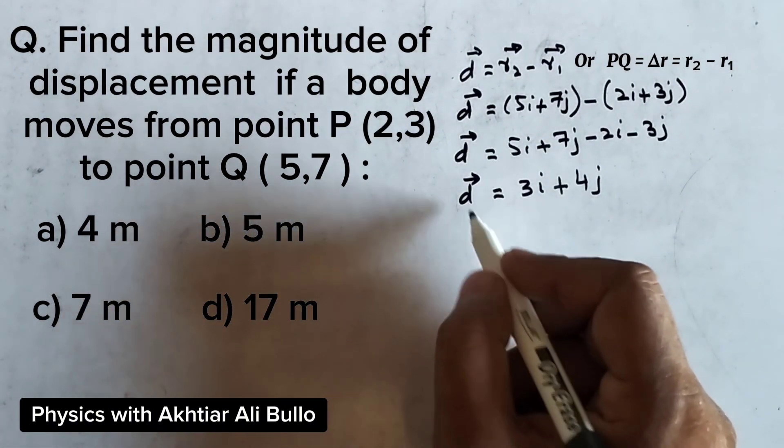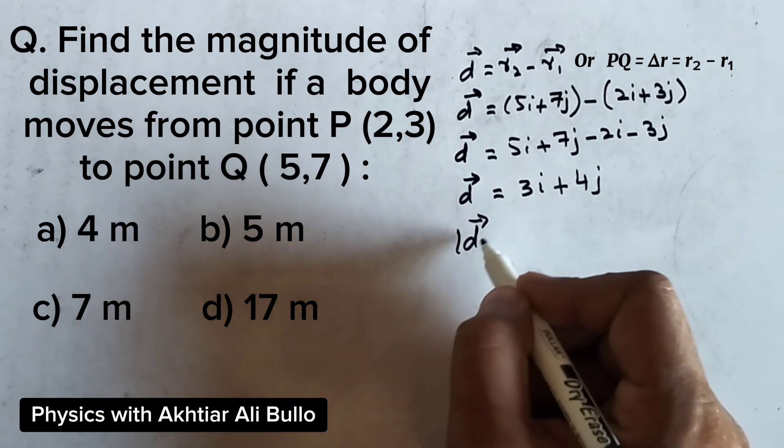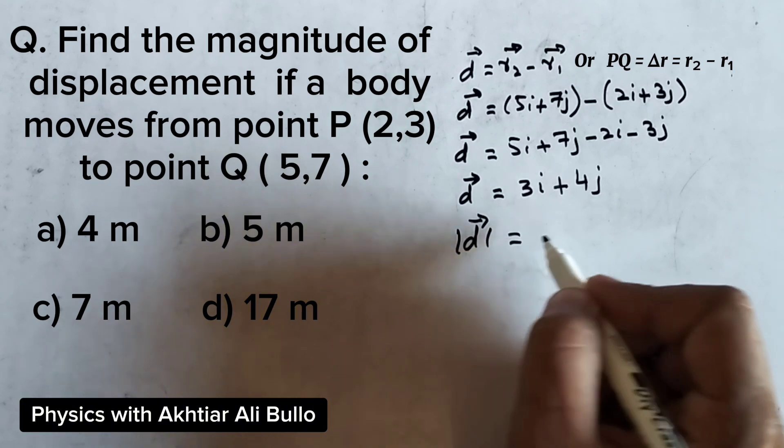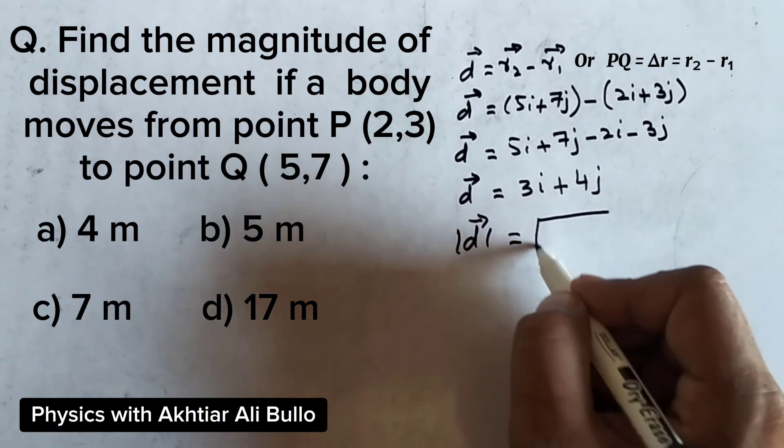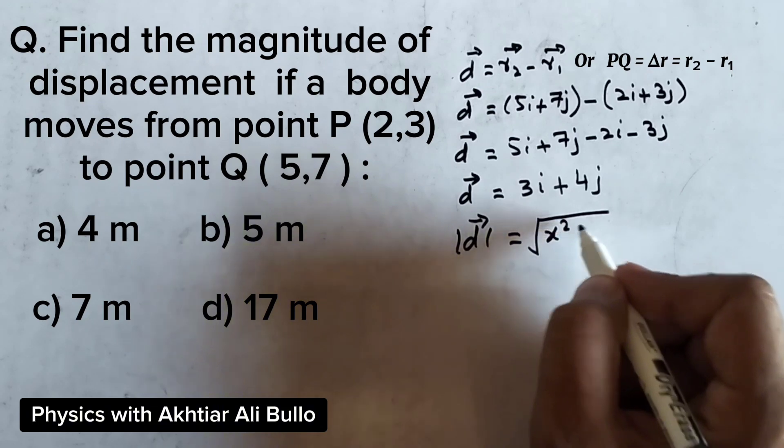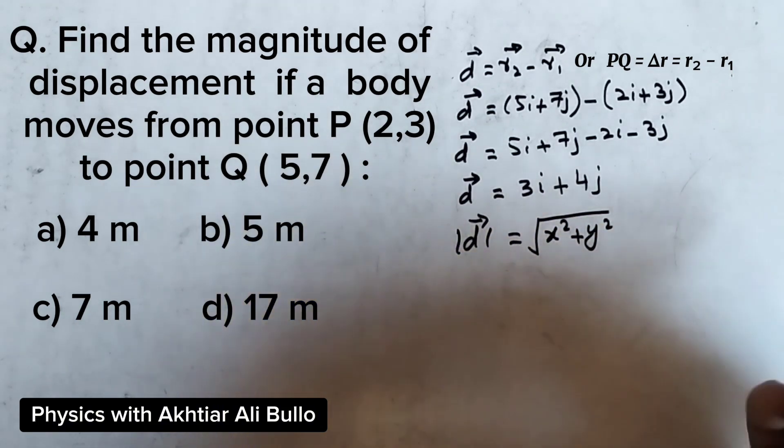Now, we will find its magnitude. To calculate the magnitude of displacement, we will use the formula: under root x squared plus y squared.